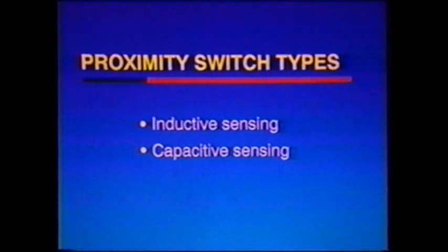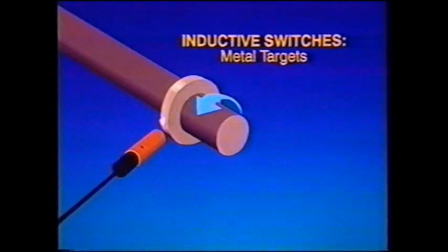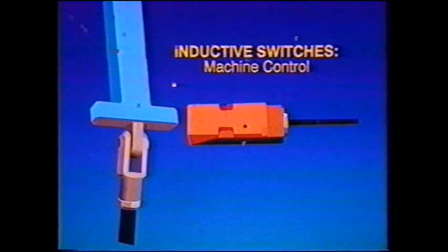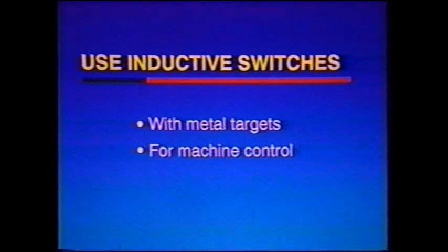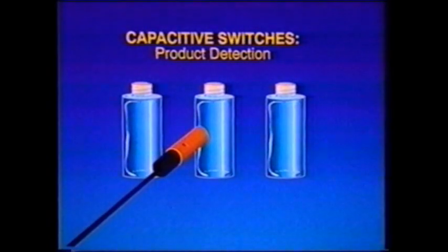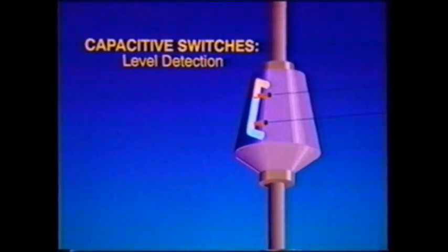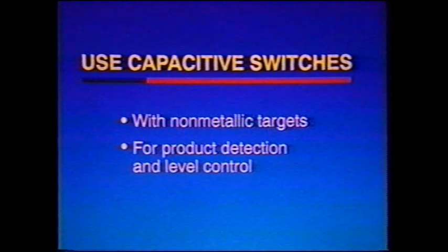This seminar is going to cover inductive sensing and capacitive sensing, the two most common technologies. Inductive switches sense metallic or other conductive materials, normally in machine control applications. Inductive switches should always be your first choice with metal targets in machine control applications. Capacitive switches, on the other hand, can sense non-metallic objects. They should be used for product detection and for level detection of liquids and granular solids. Choose a capacitive switch for non-metallic targets and for product detection and level control applications.